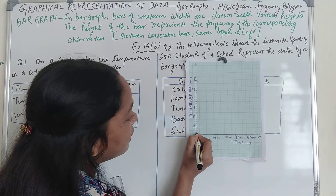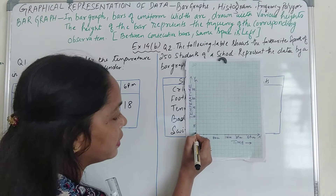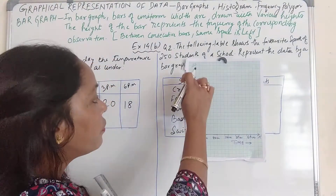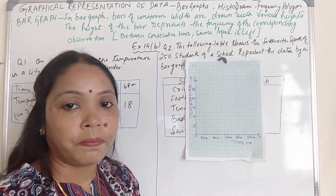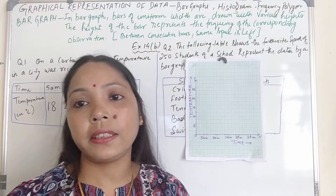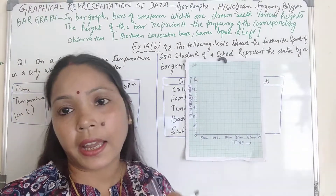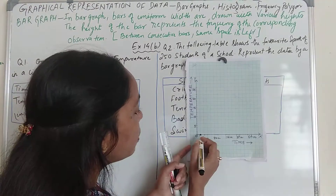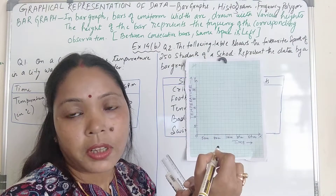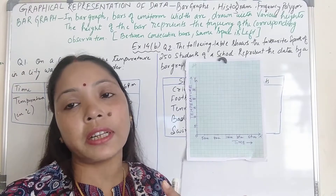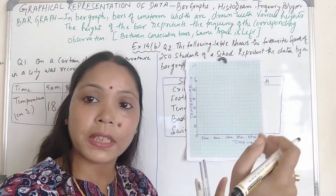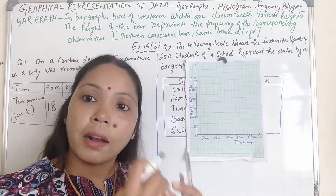The small square I have taken as 1 unit for the y-axis. This unit, you can select yourself also — it is not necessary that you take the same unit as I have taken. Here I used 2 big squares, and after 2 big squares the third square as a time marker. You can leave 1 big square or 3 big squares, then write down the time. It is up to you.